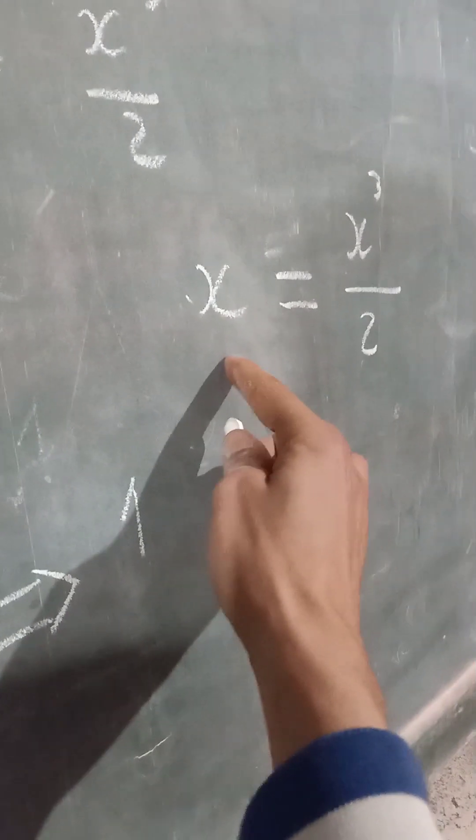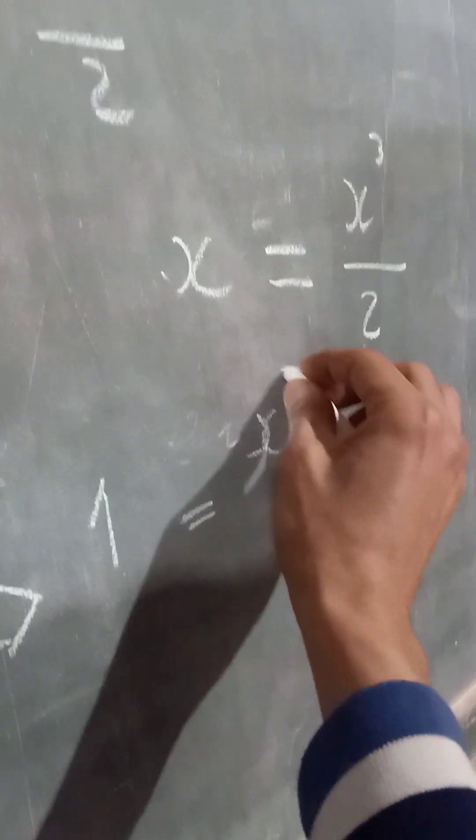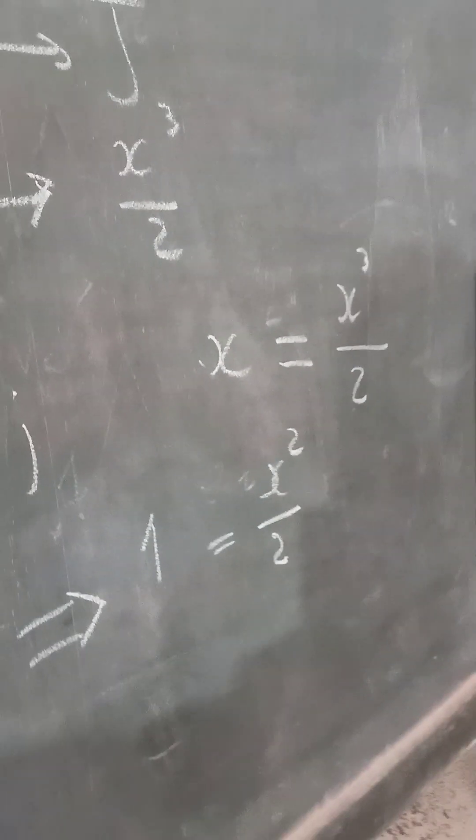So just like this. We divide by x here, so we divide by x here. So 1 equals x to the power of 2 divided by 2.